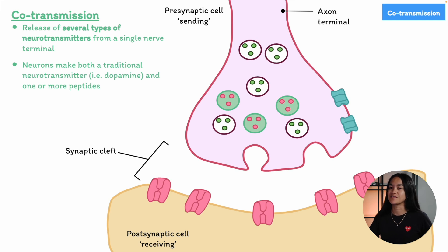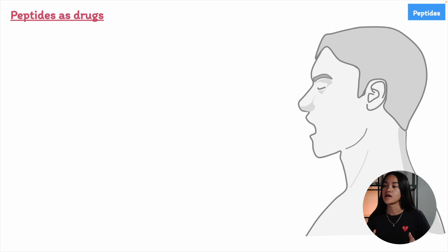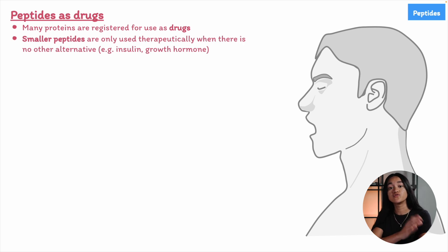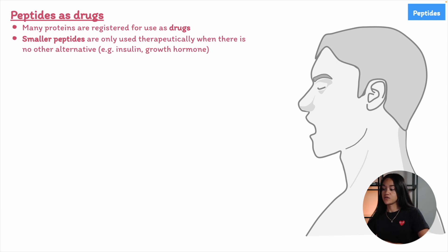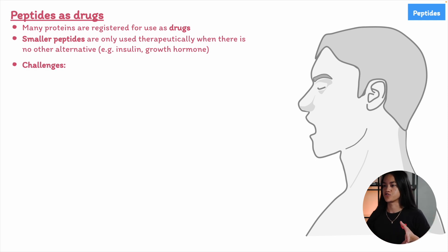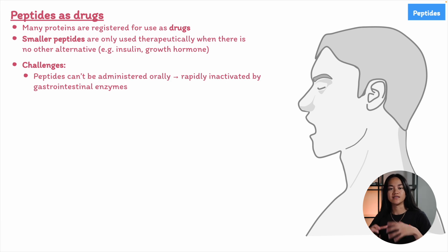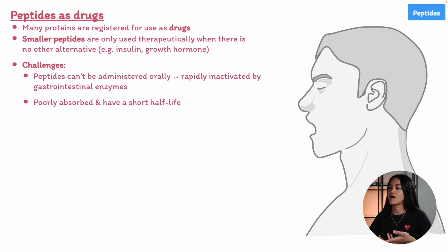Can peptides be used as drugs? Given their wide range of functions in the body, many proteins are indeed used as drugs, but smaller peptides are typically only used therapeutically when no other alternatives exist — a great example is insulin and growth hormone. However, peptides face several challenges as drugs: they can't be taken orally because they are rapidly broken down by gastrointestinal enzymes, they're poorly absorbed and have a short half-life. For neurological diseases where neuropeptides play a role, there's an additional hurdle — the blood-brain barrier, which makes it difficult for peptides to reach their target sites.